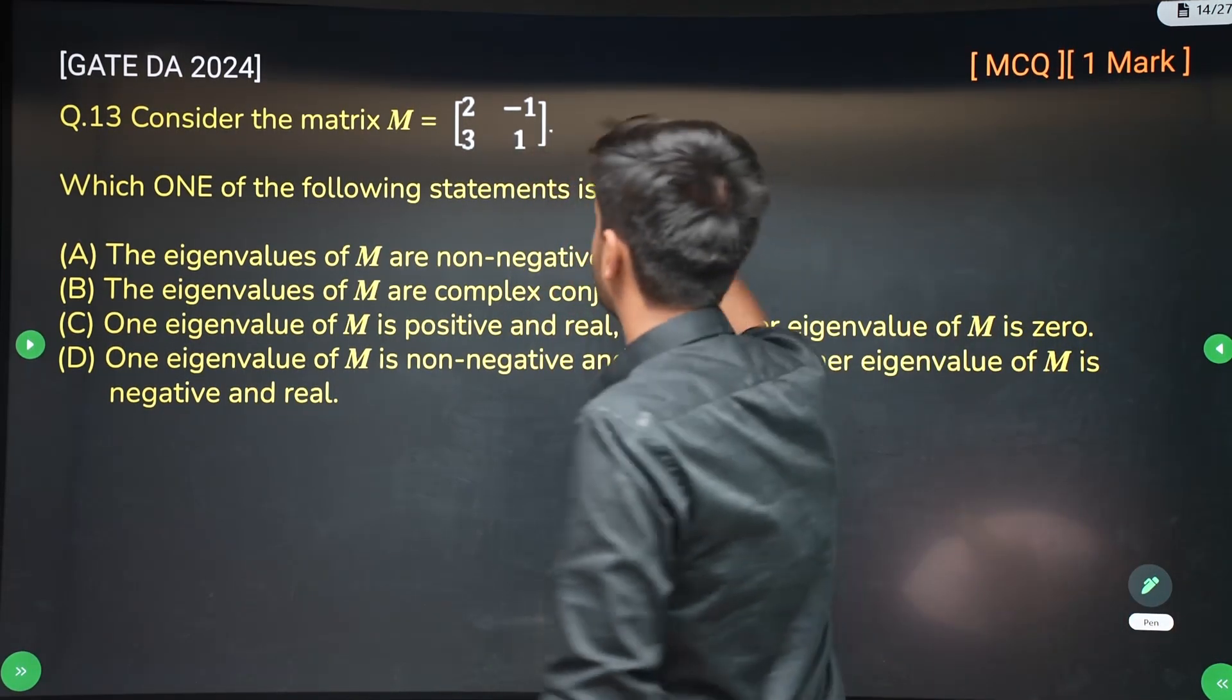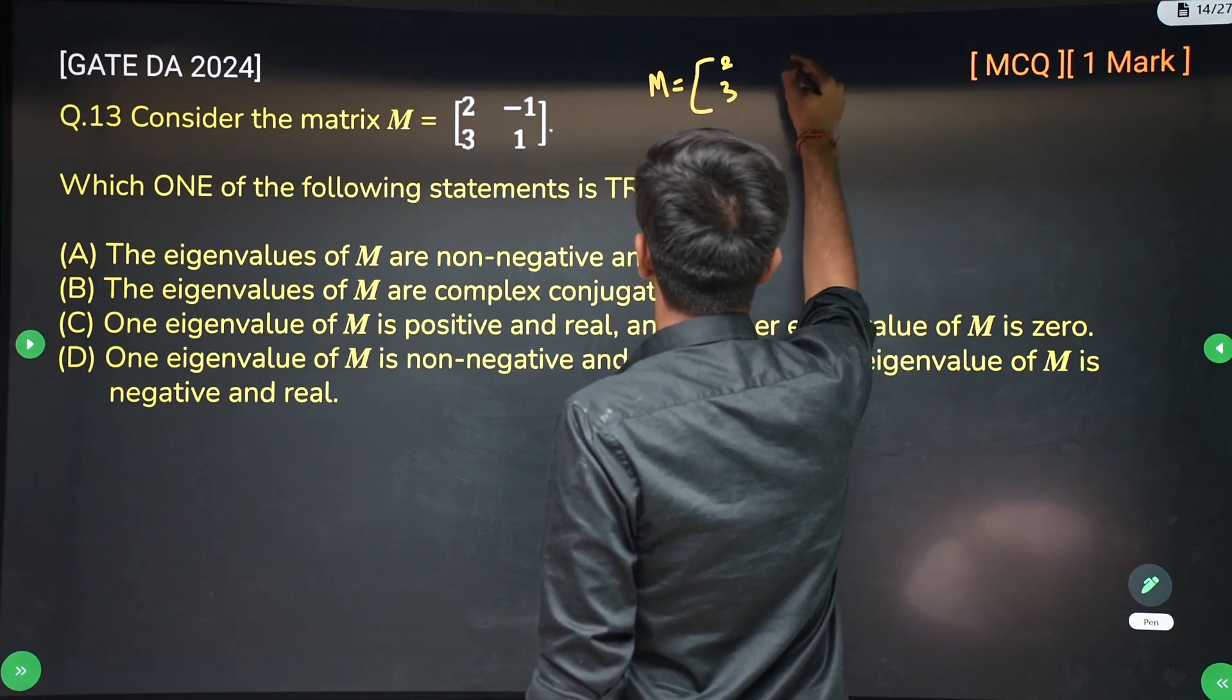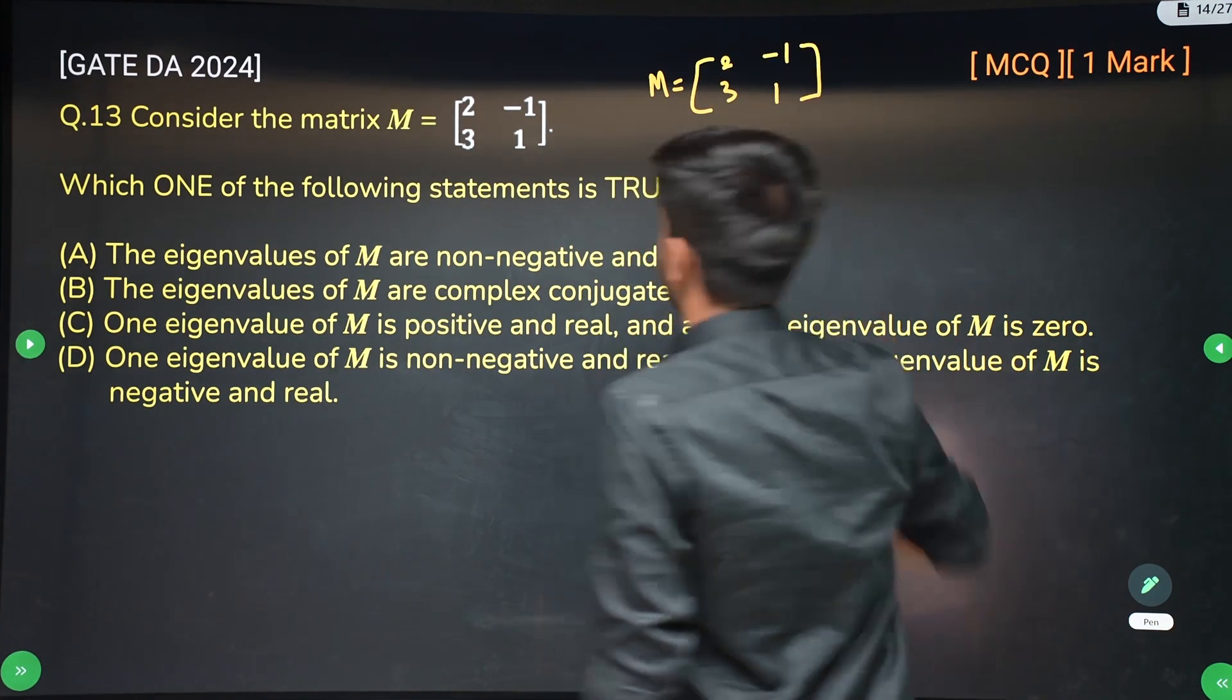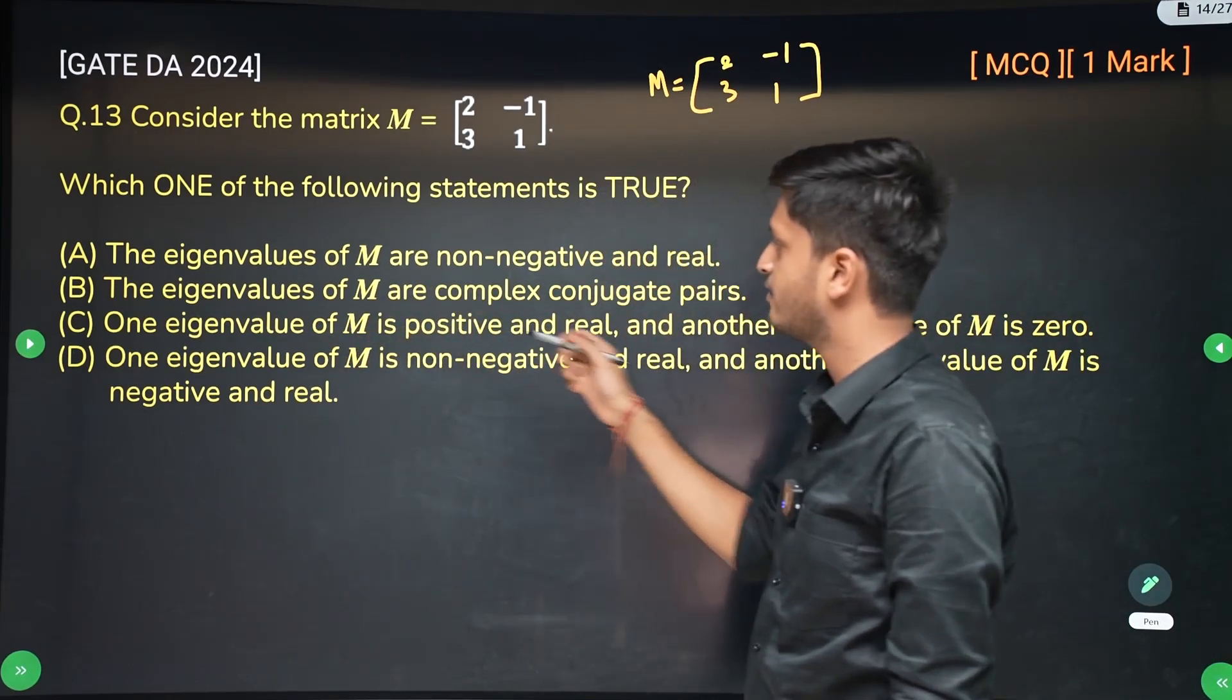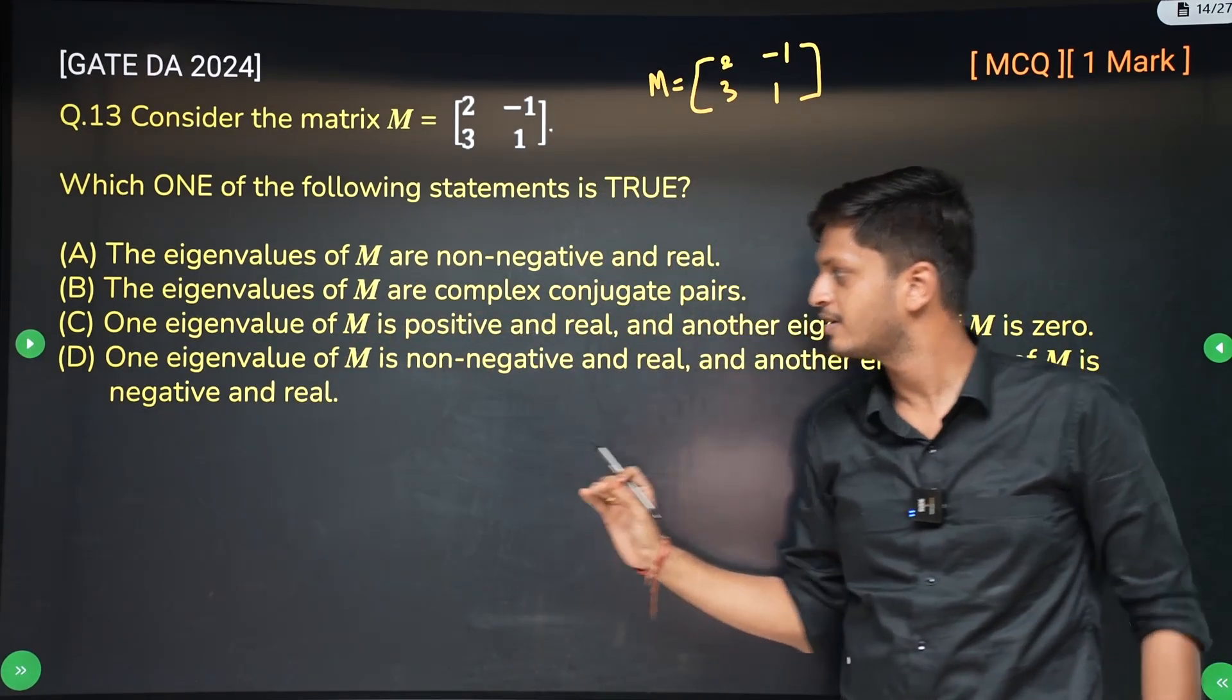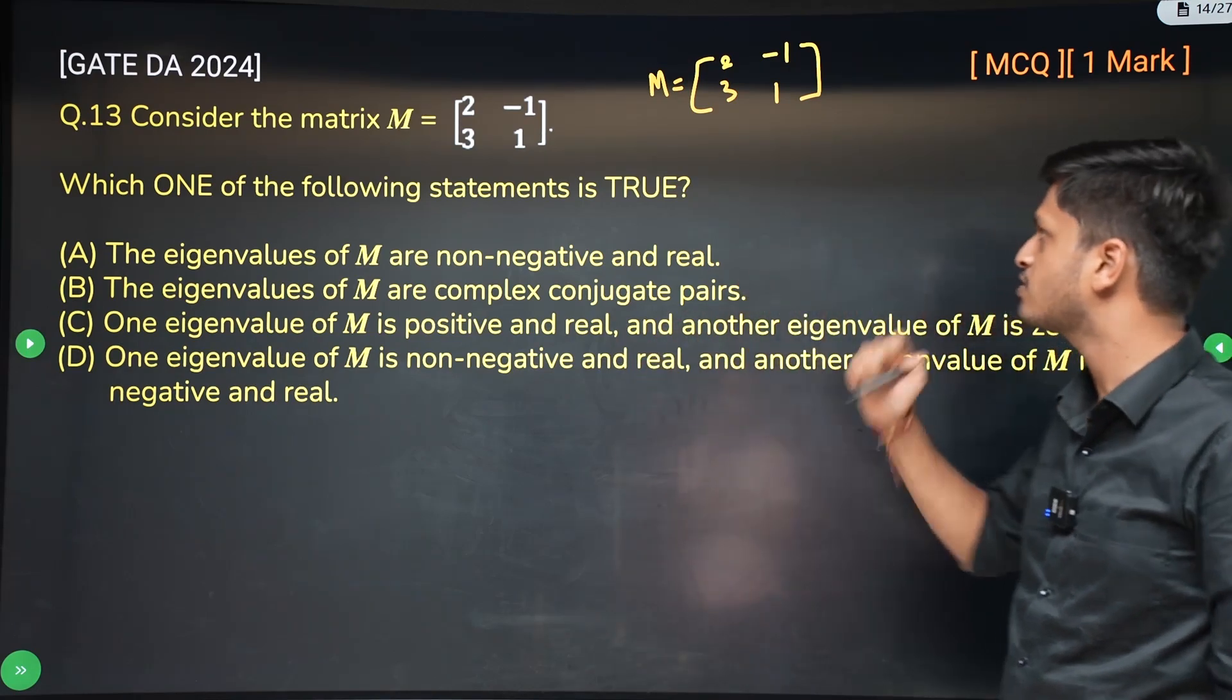Okay, so we are given a matrix M which is 2, 3, minus 1 and 1. Which of the following statements is true? So the eigenvalues of M are this, eigenvalues of M are, so by seeing the options they are talking about eigenvalues. So we have to calculate the eigenvalues of this matrix M.